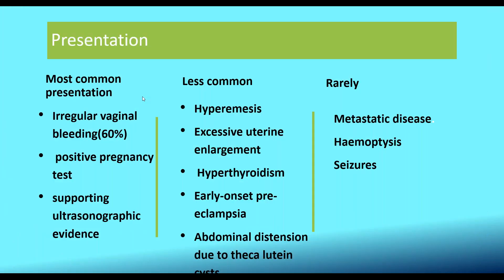What is the presentation? The most common presentation in 60% of cases is irregular vaginal bleeding with a positive pregnancy test. Ultrasound shows classic snowstorm appearance in complete mole. Less common presentations include hyperemesis, excessive uterine enlargement due to exuberant trophoblastic tissue growth, hyperthyroidism — because HCG has homology with thyroid stimulating hormone — early onset pre-eclampsia, and abdominal distension due to theca-luteal cysts.